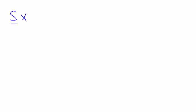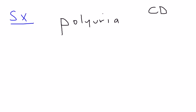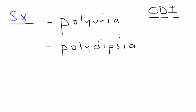I'll revisit those numbers again when we look at the clinical vignettes. So let's get into the symptoms. The first is polyuria — urinating a lot — and polydipsia — being very thirsty and drinking enormous quantities of fluid. Those are the two main symptoms of CDI, central diabetes insipidus.